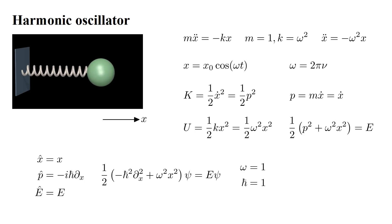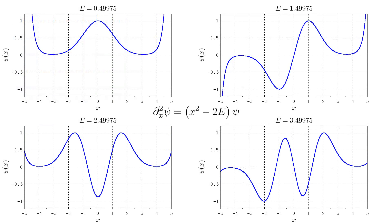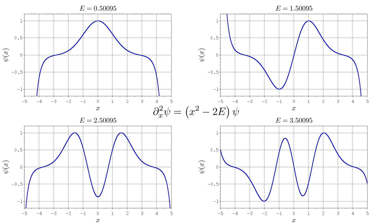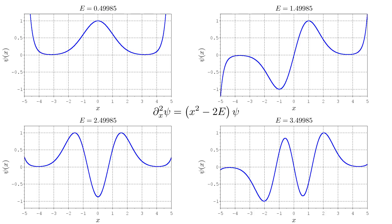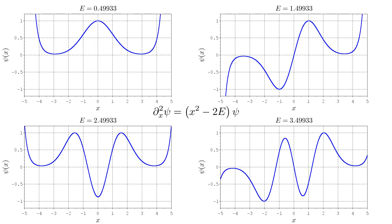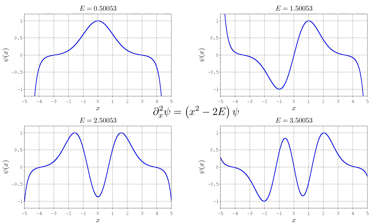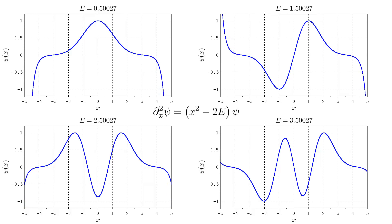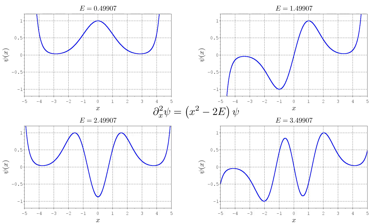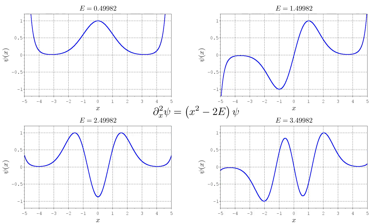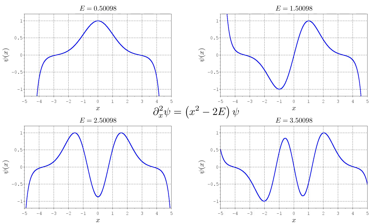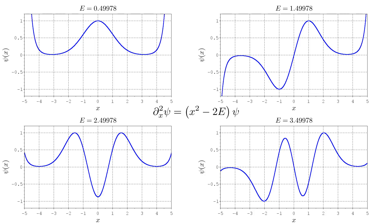To simplify the math, assume units in which h-bar is one, and take omega equal to one. Then the equation can be written as the slope of the slope, which is effectively the curvature of the wave function, equals x squared minus two E times the wave function. As is typical in quantum mechanics, this equation has physically acceptable solutions only for a discrete set of energy values. This is apparent if we solve the equation numerically for varying values of E — the so-called shooting method. For most values of E, the wave function blows up for large absolute values of x, which cannot represent a valid quantum state. But for certain values of E, the wave function does flatten out for large x values, giving us the valid quantum states of the harmonic oscillator.